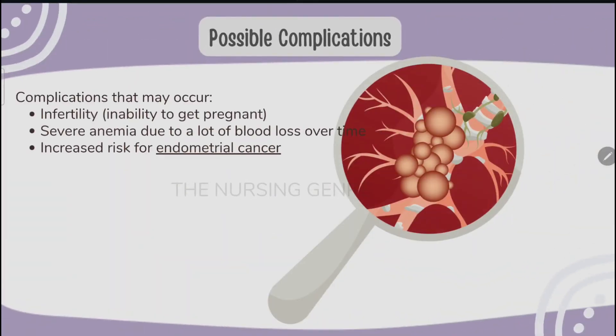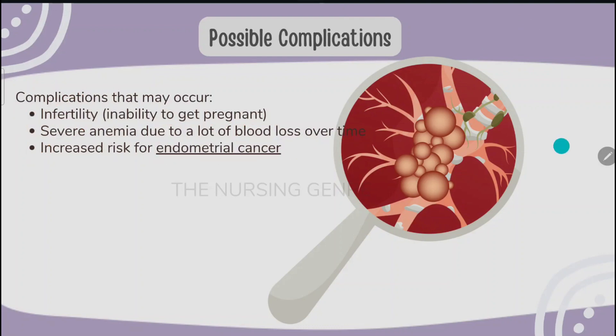Possible complications of abnormal uterine bleeding include infertility and an increased risk for endometrial cancer. These are the main possible complications.